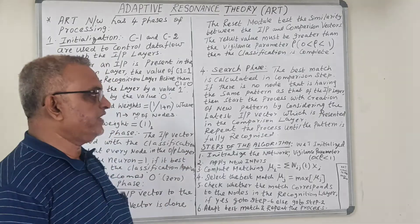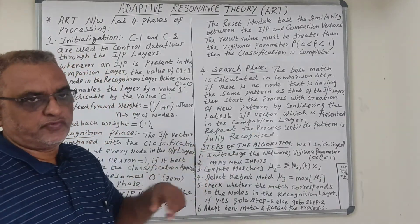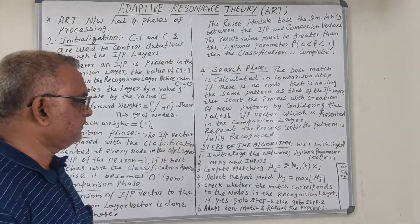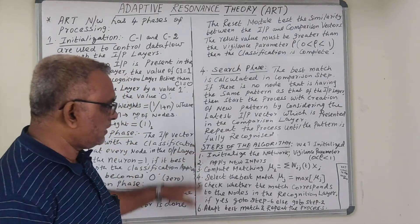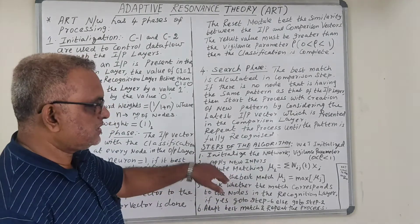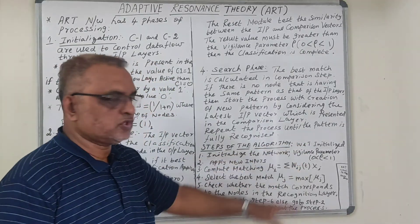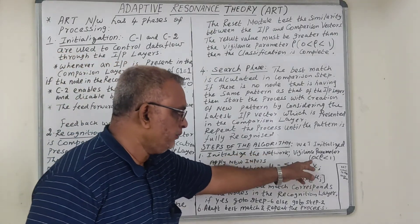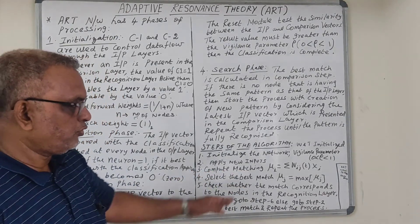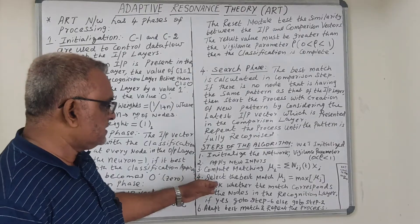In the search phase, if no node has the same pattern as the input layer, a new pattern is created using the latest input vector presented in the comparison layer. The process repeats until the pattern is fully recognized. In terms of algorithm steps: Step 1 is initializing the network — initializing weights w(t) and the vigilance parameter rho between 0 and 1. Step 2 is applying new inputs and computing the matching score mu_i = summation of w_ij(t) * x_i.